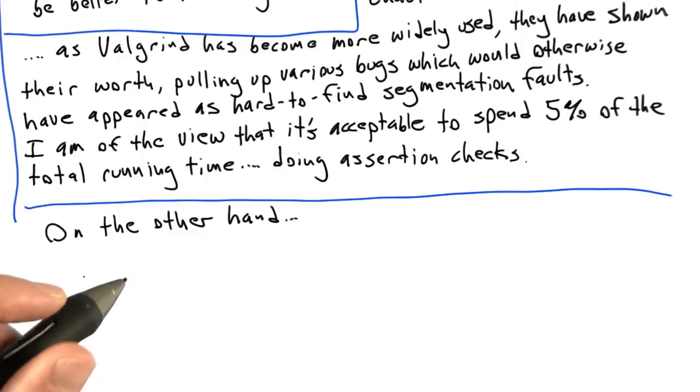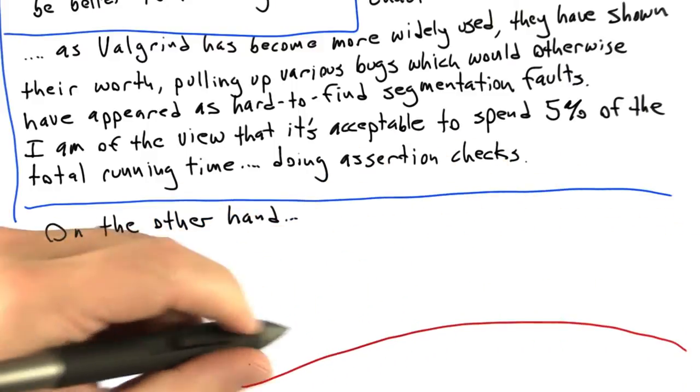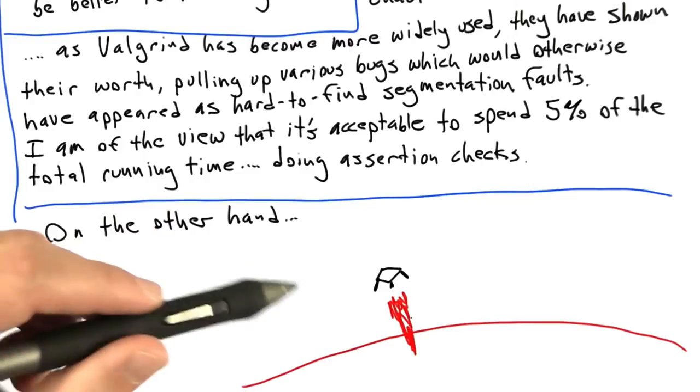On the other hand, let's imagine that we're working at NASA or someplace like that, and we're writing software that's going to be controlling a spaceship as it lands on Mars or some other planet. We have to ask ourselves the question, do we want to enable assertion checks for this kind of a mission?